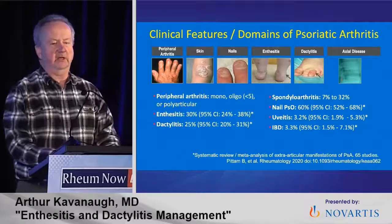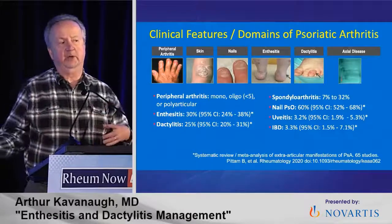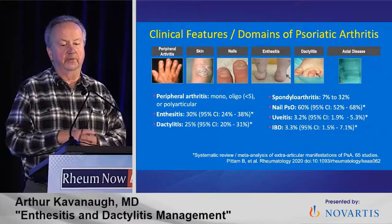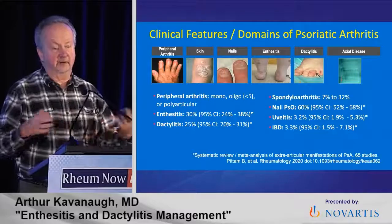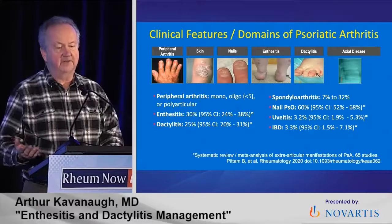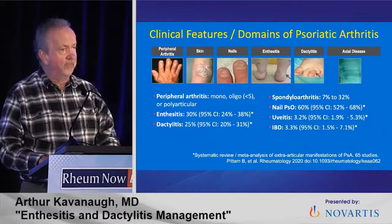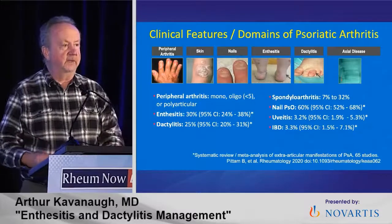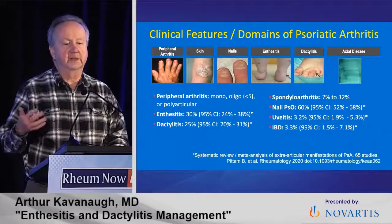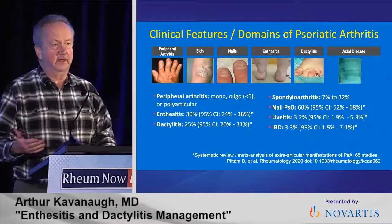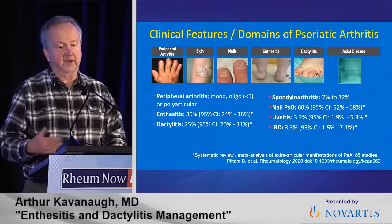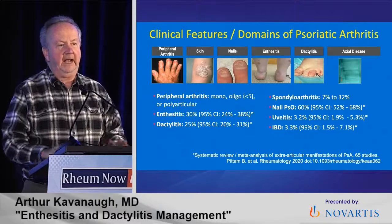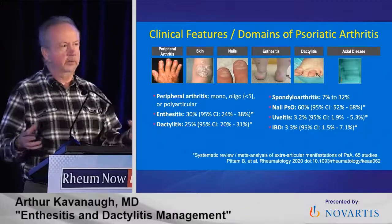How common is it? Looking at psoriatic arthritis, a systematic review of 65 studies of various extra-articular and other domains found that enthesitis is pretty common — 30% of patients had enthesitis, 25% had dactylitis. These numbers are probably similar in SpA. More common than uveitis, which is 3%, and the same with inflammatory bowel disease. Enthesitis and dactylitis are common, and I think of them as kind of the missing piece of the complete approach to the patient.